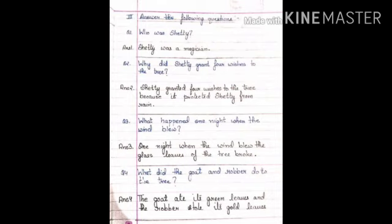The next question is what happened one night when the wind blew? Children, you must know that the tree asked for a wish to have glass leaves. And then when the wind blew at night, all its glass leaves broke.